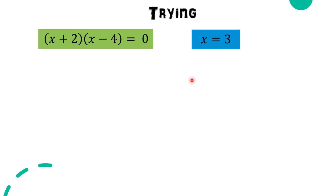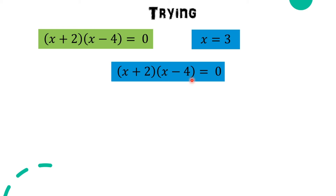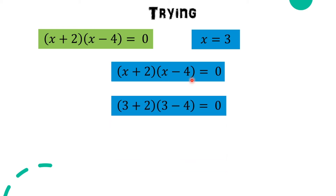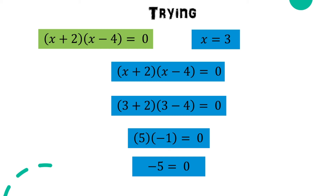Now let's try substituting another number into the given factors. With x + 2 and x - 4 equal to zero, substituting x = 3 gives us (3 + 2)(3 - 4) = 0, which is 5 times negative 1, giving negative 5 equal to zero. That is false, so there is no other answer. We have only two solutions: x = -2 and x = 4. This makes sense because in a quadratic equation, the maximum number of solutions is 2.